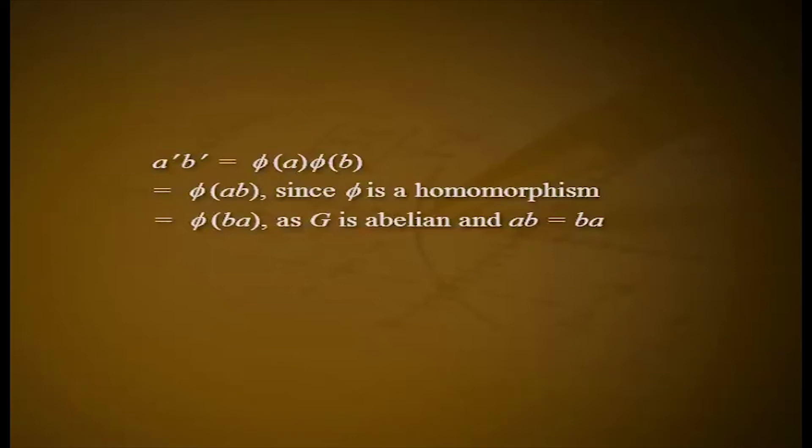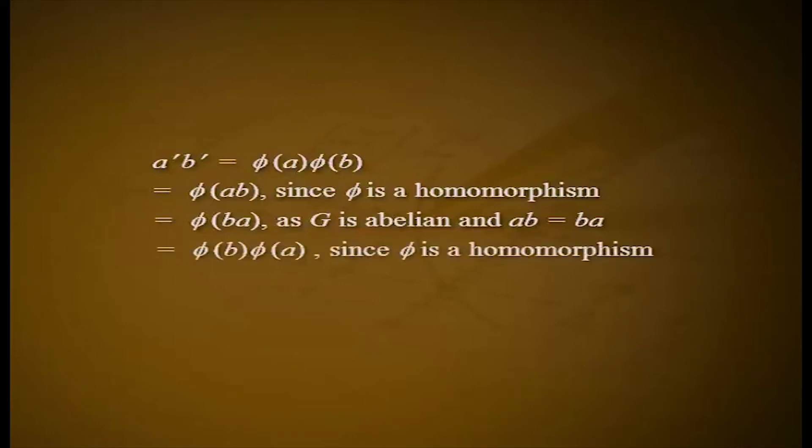Theorem 1: Let phi from G to G dash be a group homomorphism of G onto G dash. If G is abelian, then G dash is abelian. Proof: Let a dash, b dash belong to G dash. Since phi is onto, there exist a, b in G such that phi of a equals a dash and phi of b equals b dash. Now, a dash·b dash equals phi(a)·phi(b) equals phi(ab), since phi is a homomorphism, equals phi(ba) since G is abelian, equals phi(b)·phi(a) equals b dash·a dash. Hence G dash is abelian.